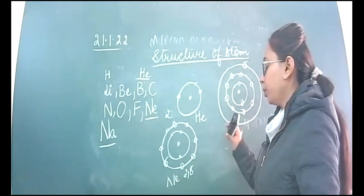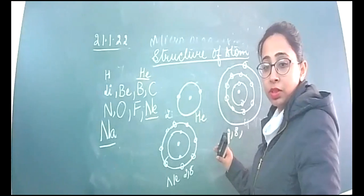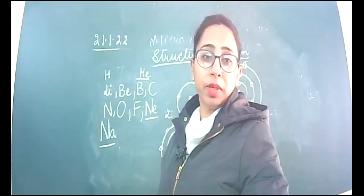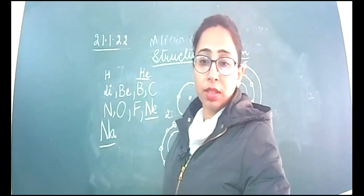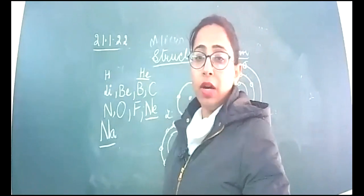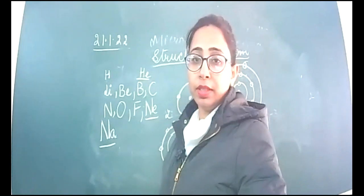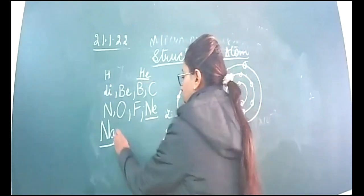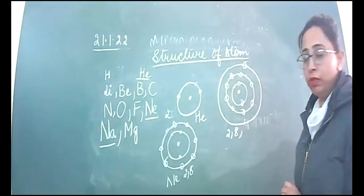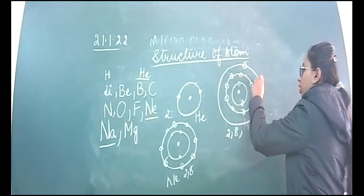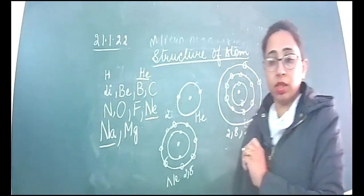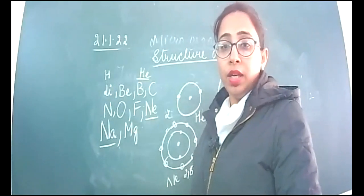After neon, the next element is sodium, Na, with atomic number 11. The electronic configuration will be 2, 8, 1. After sodium, what will be the next element? Magnesium, Mg, which has atomic number 12 and one more electron. Now it will be 2, 8, 2.